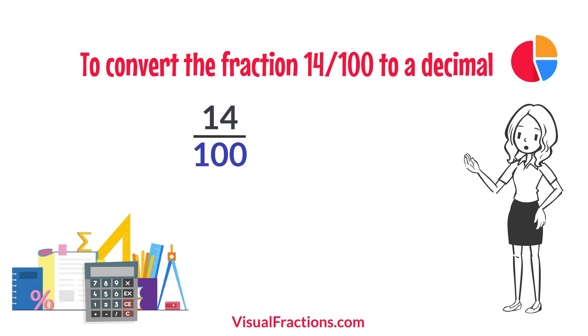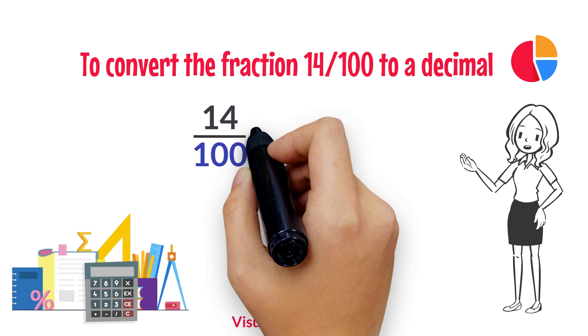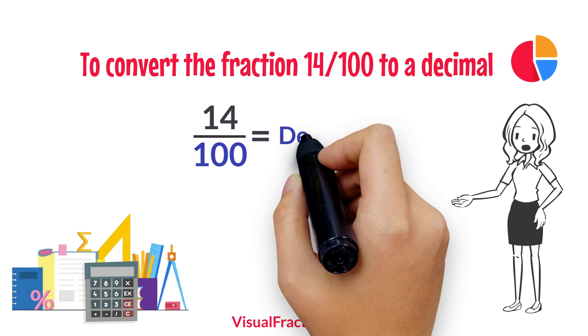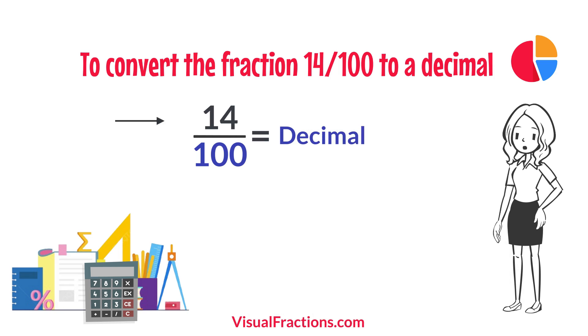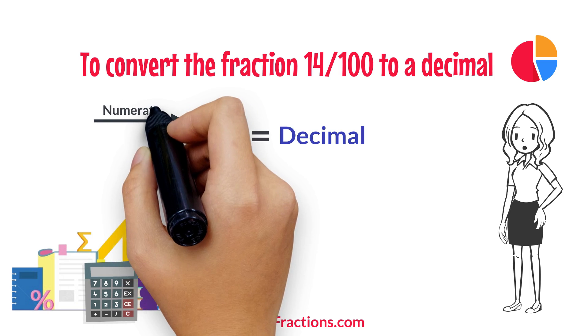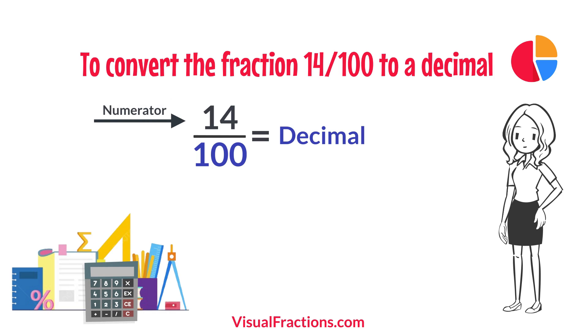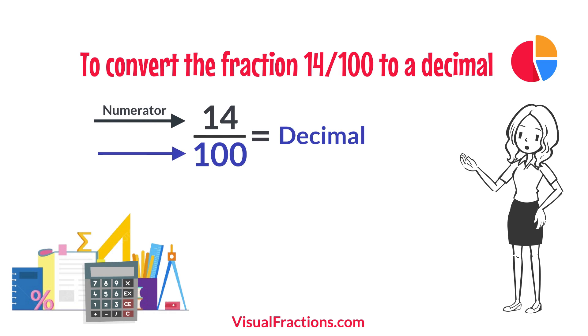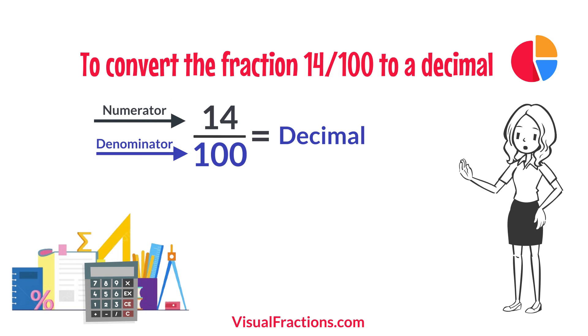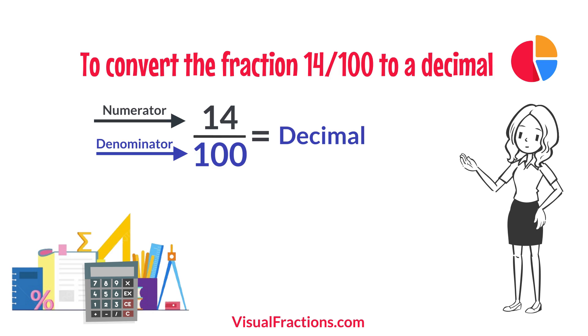To convert the fraction 14 one hundredths to a decimal, all we need to do is divide the numerator, the top number, by the denominator, the bottom number. So, we simply divide 14 by 100.